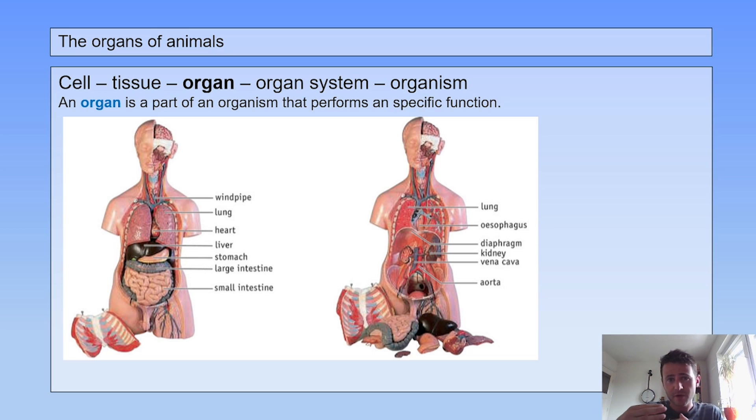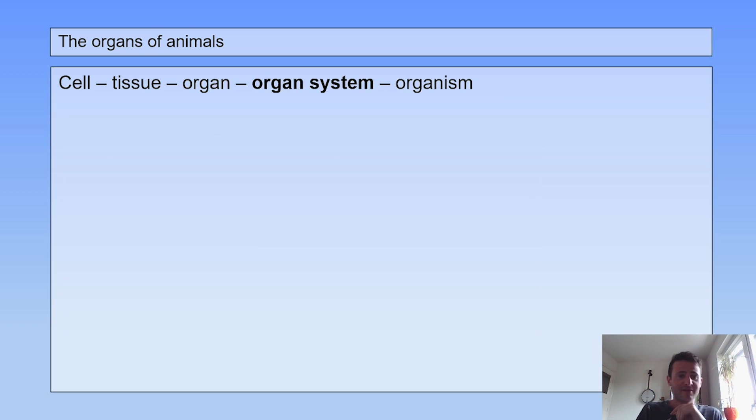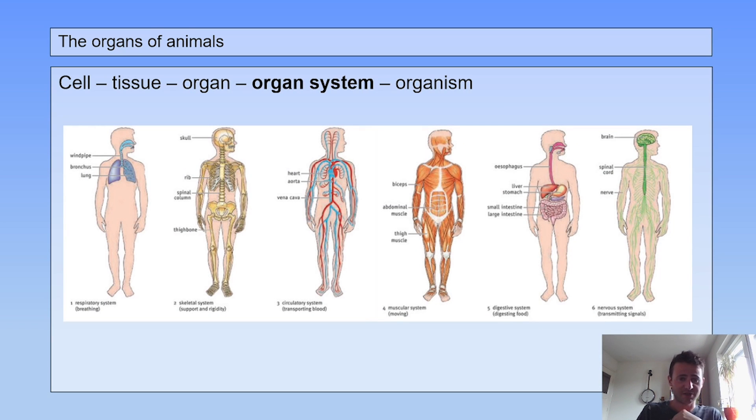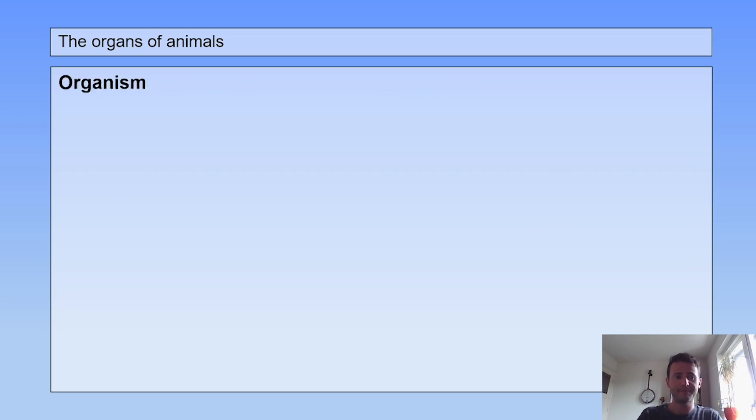But also organs need a little help from their friends, and that's when we come to organ systems. Groups of organs that work together are called organ systems. For example, in the circulatory system, the heart is responsible for pumping around blood, but the blood vessels are responsible for the transportation of blood. All these organ systems together combine into an organism.